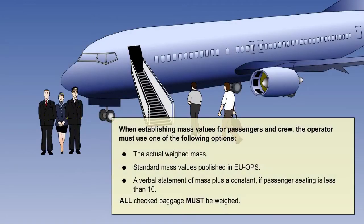The operator shall compute the mass of passengers and checked baggage either by weighing or by using standard mass values found in EU Ops 1. If the passenger seats available are less than 10, a verbal statement from the passenger can be used, to which a constant is added. The method preferred by the operator must be stated in the operations manual. It is most important to understand that all checked baggage must be weighed.